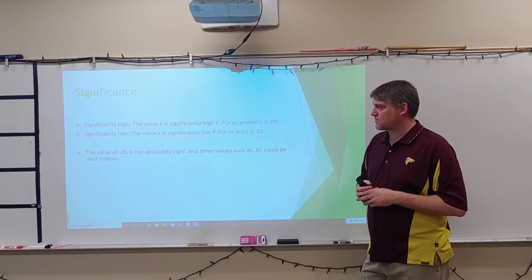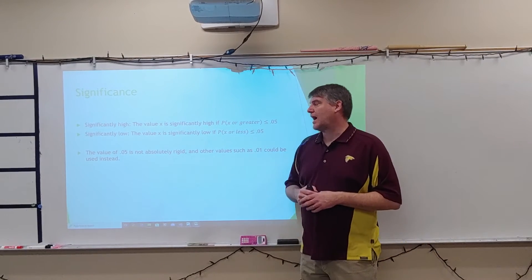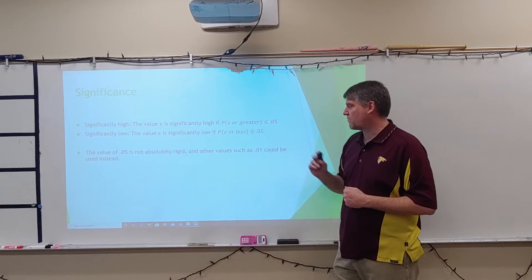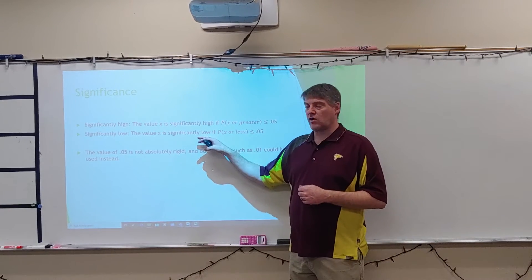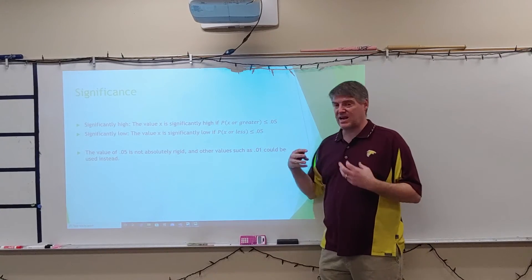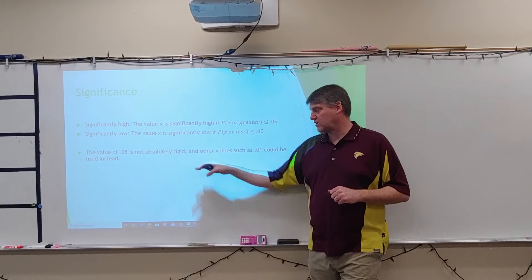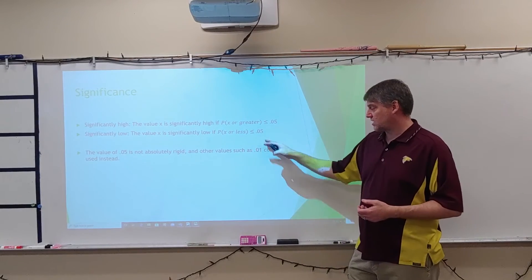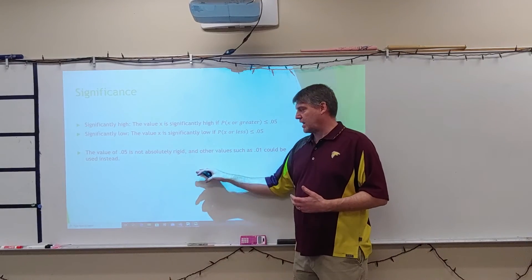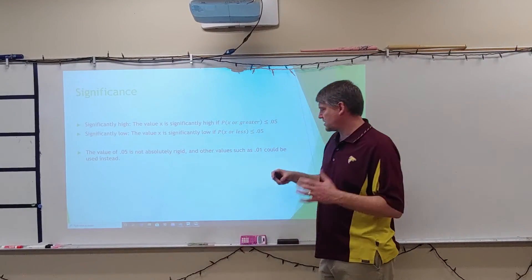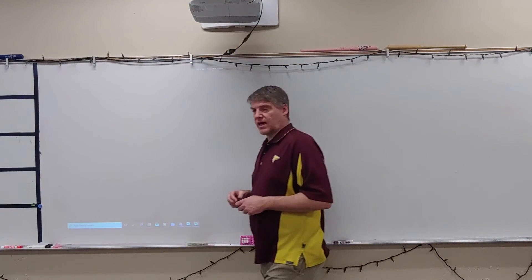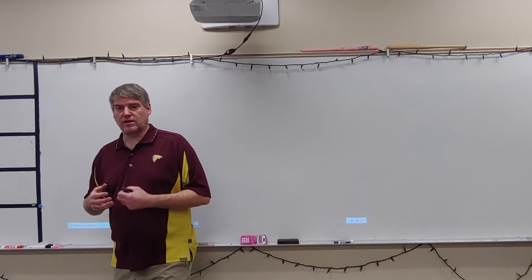Significance: a value is significantly high if the probability of x or greater is less than or equal to 0.05, and significantly low if the probability of x or less is less than 0.05. This 0.05 threshold is not absolutely rigid — it could be 1% or 2.5%. Often a 5% or 1% threshold is used depending on the context. That covers using the real applications of normal distributions.